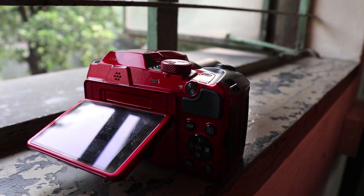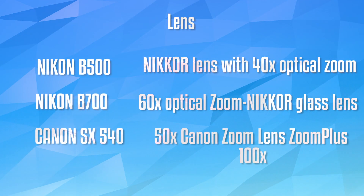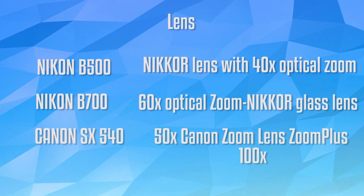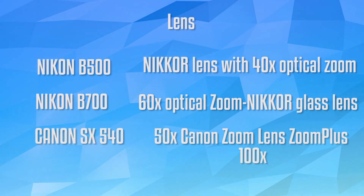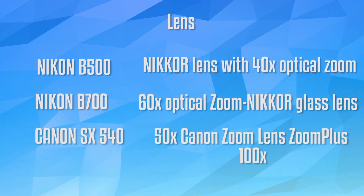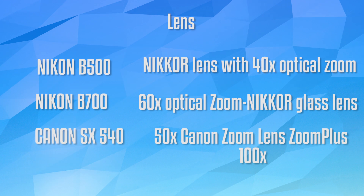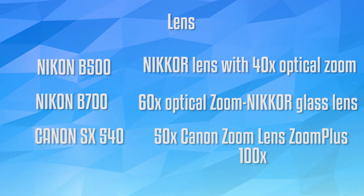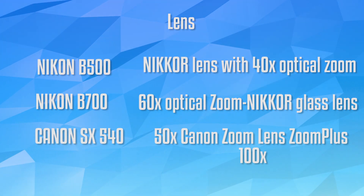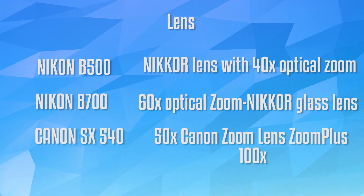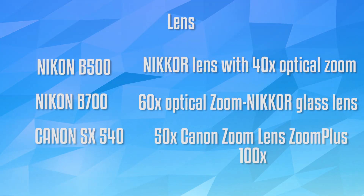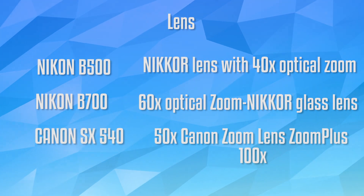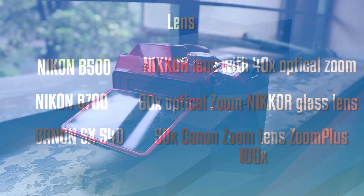Coming to the lens, the Nikon B500 has a Nikkor 40x optical zoom lens. The B700 has a 60x optical zoom lens with Nikkor glass, and the Canon SX 540 has a 50x Canon zoom lens with an extra 100x zoom, which is amazing.